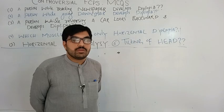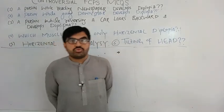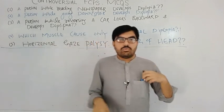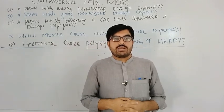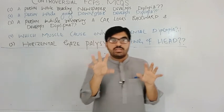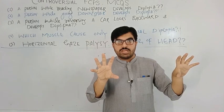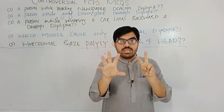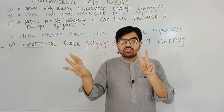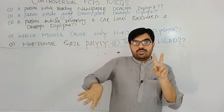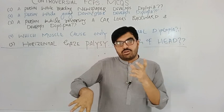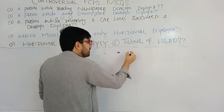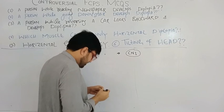Another MCQ: a person comes with an eye looking outward and downward — which nerve is paralyzed? That is cranial nerve 3. When CN3 is paralyzed, the remaining two nerves — lateral rectus (CN6) and superior oblique (CN4) — are still active. Lateral rectus moves the eyeball laterally and superior oblique moves it downward, so the eye looks outward and downward due to the unopposed effect of these two muscles.